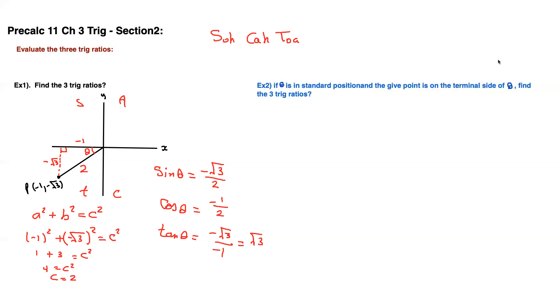Question B is a little bit different. What's happening here, if theta is in standard position and the given point is on the terminal side of theta, find the three trig ratios. So here it's a question similar to this, but you just have to graph your point. And I think the point that was given to us here is negative 2 root 3 and 2. So this is the point that they want us to find the three trig ratios for.